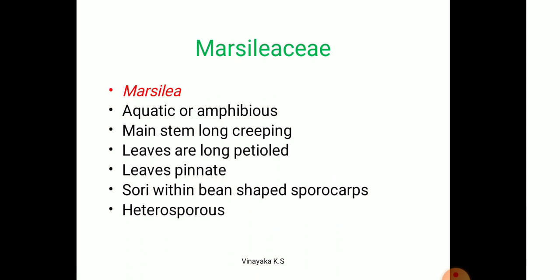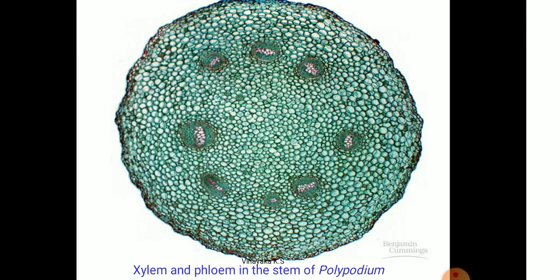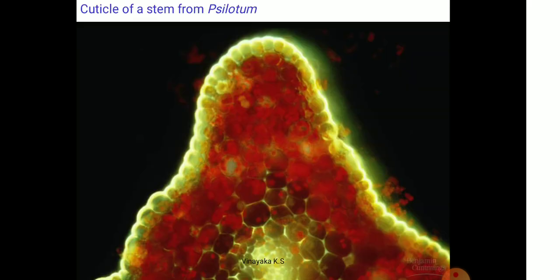The next group is Marsiliaceae, example Marsilea. Marsilea is an aquatic and amphibious form. The leaves are long-petiolated, and four pinnate leaves will be present. Sori bear sporocarps, and they bear heterospores. The leaves are tetra-shaped with a long petiole. The sporocarp is indicated in the picture. Marsilea commonly grows in moist shady places, paddy fields, and moisture areas.